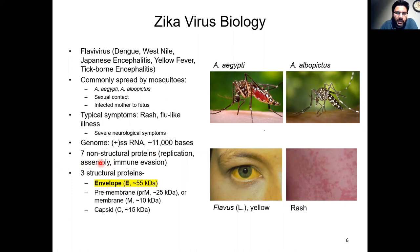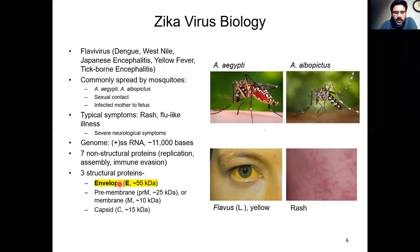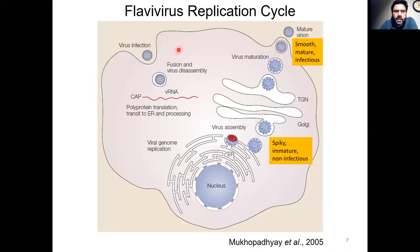The non-structural proteins are also involved in assembly of progeny particles and evasion of the host's immune response. The structural proteins are those that go into making the virus particles; they include the envelope or E-protein, the pre-membrane or PRM, its derivative membrane or M protein, and the capsid or C-protein. The focus of my talk today is on the envelope or E-protein.